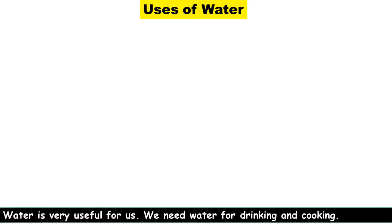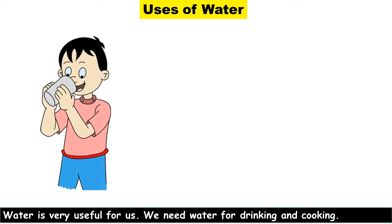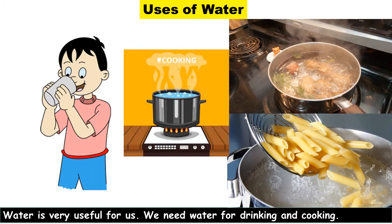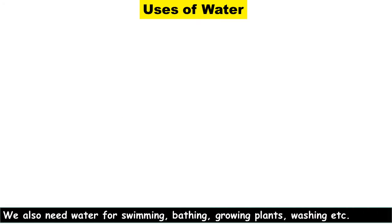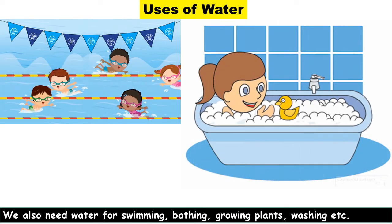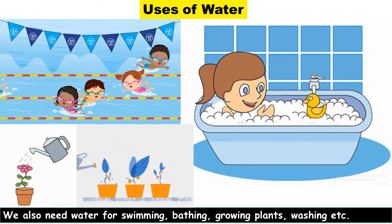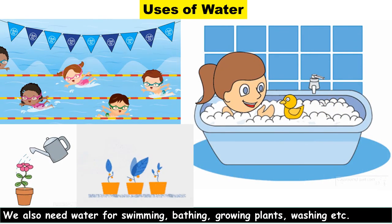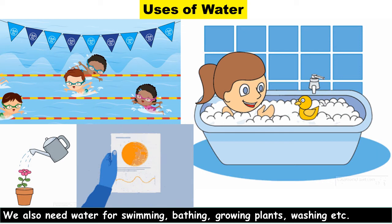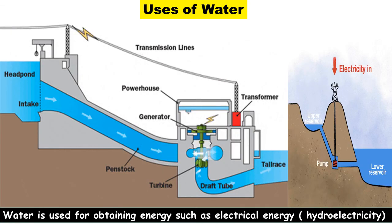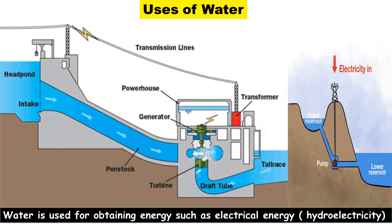Uses of water: Water is very useful for us. We need water for drinking and cooking. We also need water for swimming, bathing, growing plants, and washing. Water is also used for obtaining energy, such as electrical energy through hydroelectricity.